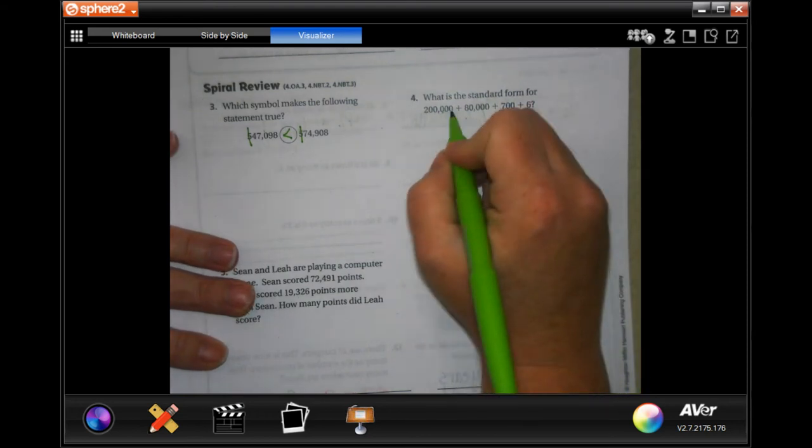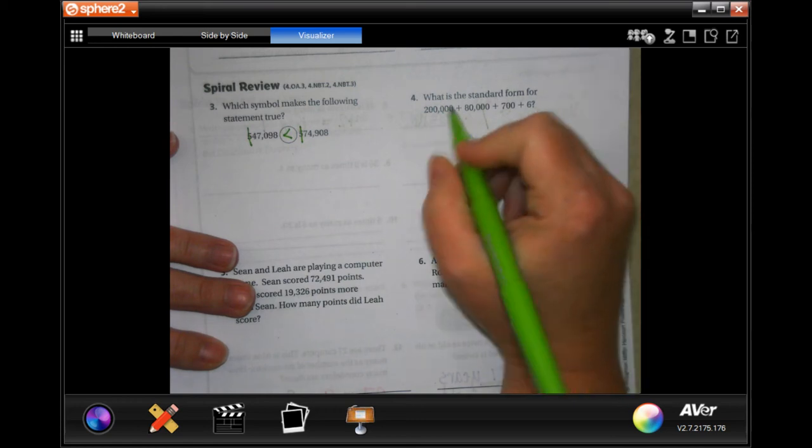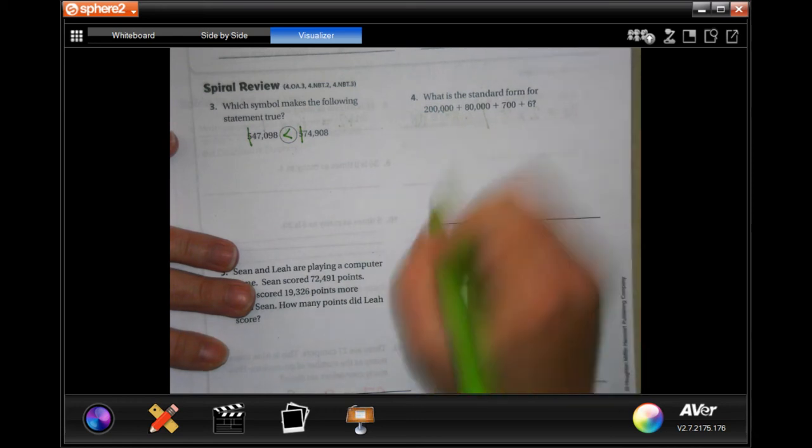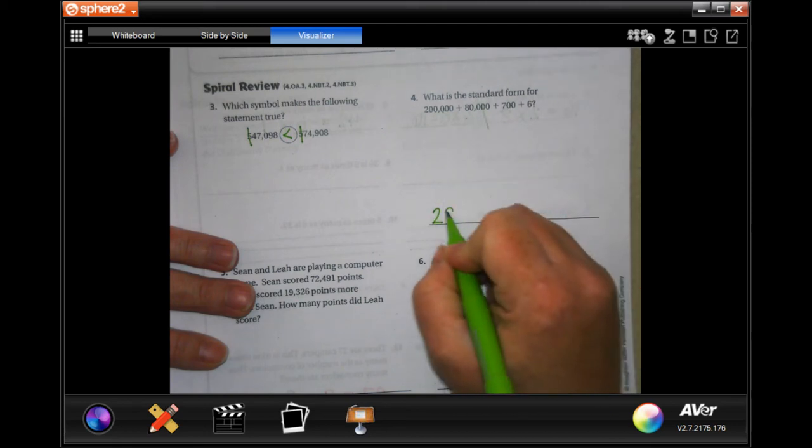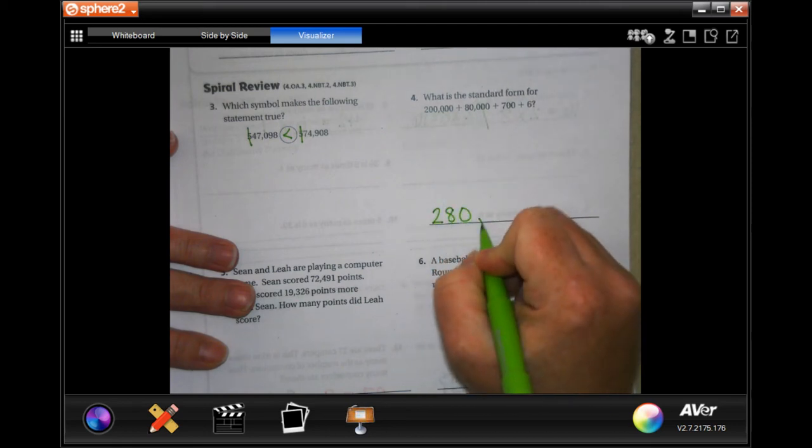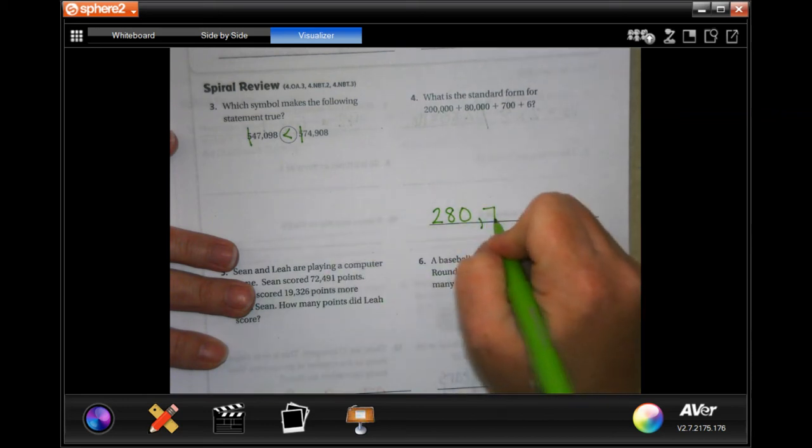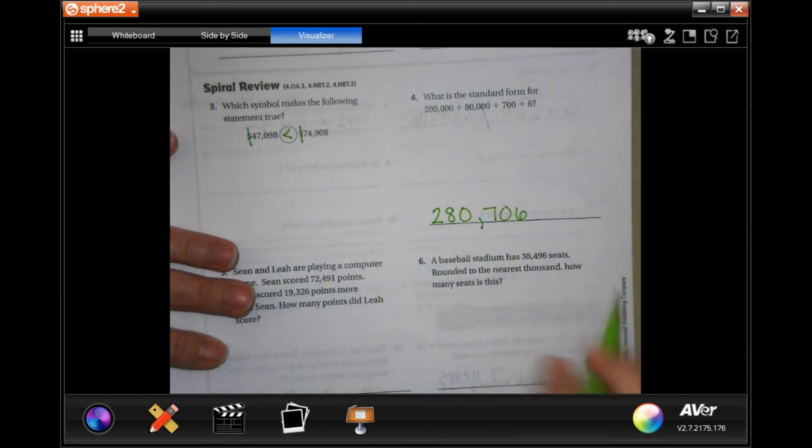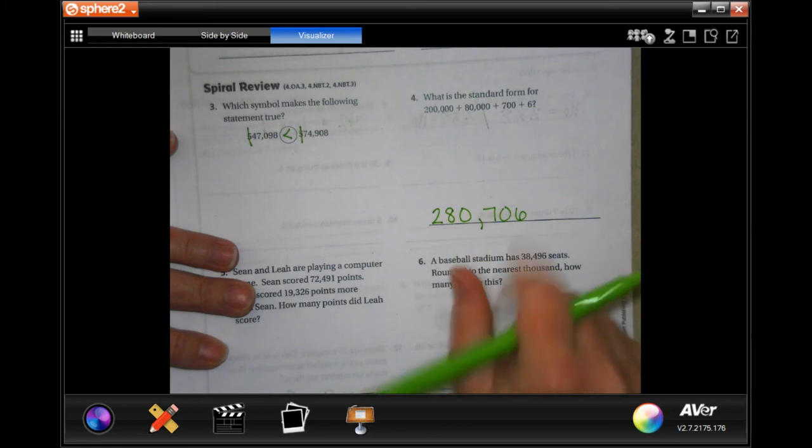Standard form. We have 200,000, 80,706. So 280,000, that's still after the thousand, 706. There's no number in the tenth place. There's no number in the thousands place. It's just the ten thousands and the hundred thousands, the hundreds and the ones.